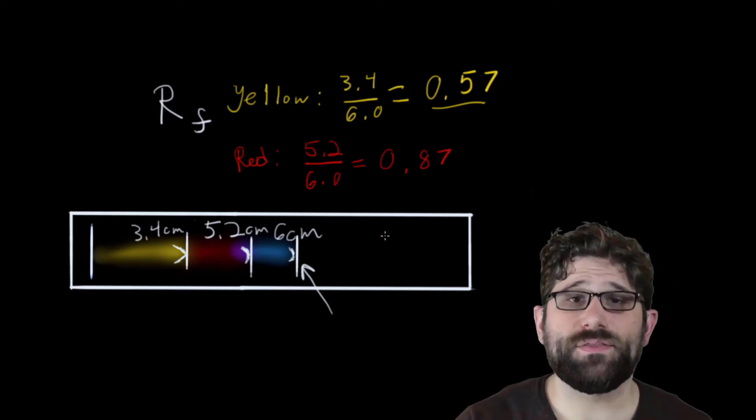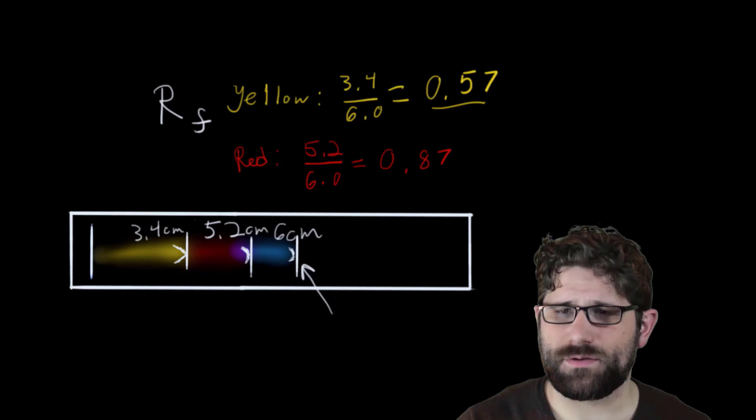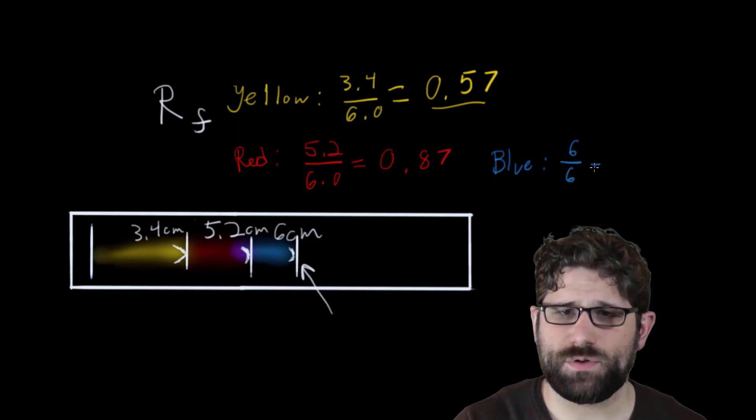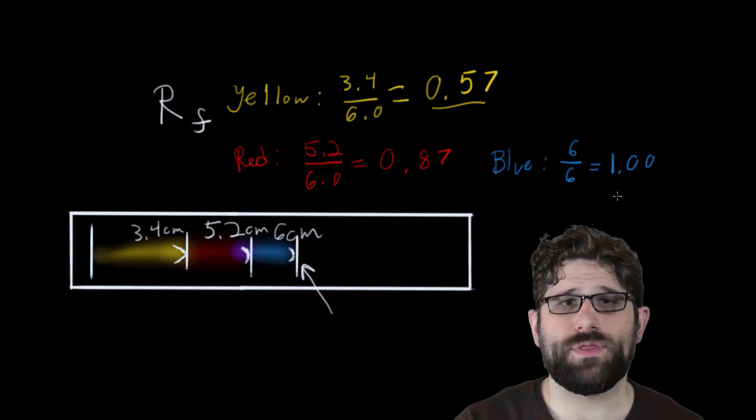And then finally, the blue one, well, it traveled six centimeters and the solvent traveled six centimeters. So that one should be a no brainer. It's just going to be 6 divided by 6, which will be 1.00. So that's the RF value there.